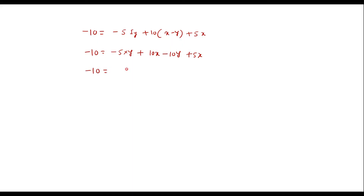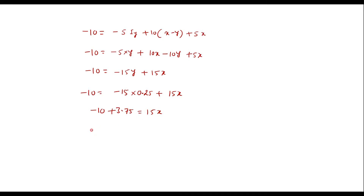Simplifying: minus 10 equals minus 15y plus 15x. We already found y equals 0.25, so: minus 10 equals minus 15 times 0.25 plus 15x, which gives minus 10 plus 3.75 equals 15x, so minus 6.25 equals 15x. Therefore x equals minus 6.25 divided by 15, which gives minus 0.41667. So x equals ix equals minus 0.41667 amps.